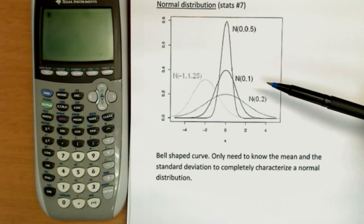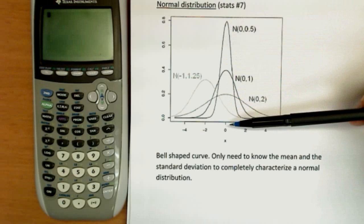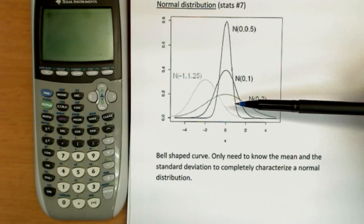I have four different normal distributions, and you can see they all have that bell-shaped curve. They're symmetric, they're centered around their mean or average, and they're the same on either side of that.